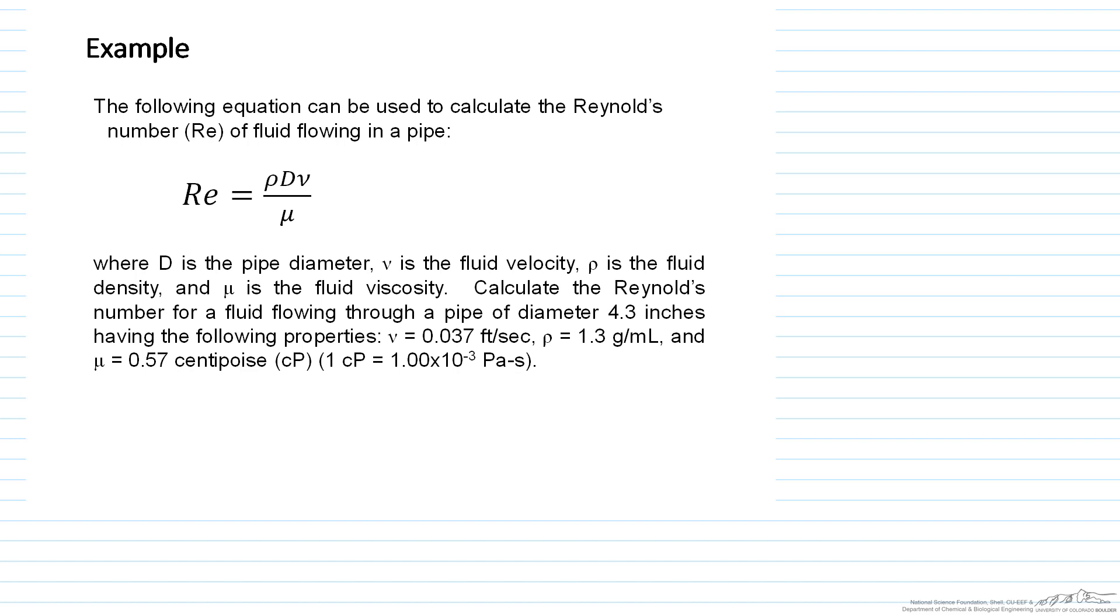Okay, in this example I'm going to go through calculating the Reynolds number, which is an important number in fluid dynamics. So the following equation can be used to calculate the Reynolds number. We have the Reynolds number is rho, which is the density, times the diameter of the pipe, times nu, which is the fluid velocity, divided by mu, which is the fluid viscosity.